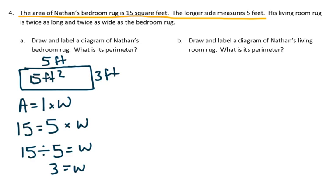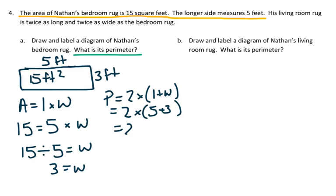The question's asking us, what is the perimeter? Now that I know my dimensions, I'm going to use my perimeter formula. Perimeter equals 2 times the length plus width, 2 times 5 plus 3, 2 times 8, which is equal to 16. Our unit here is feet, so the perimeter is 16 feet.